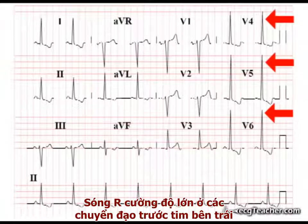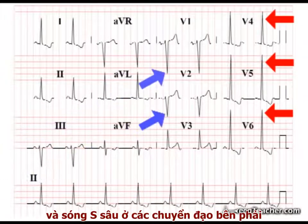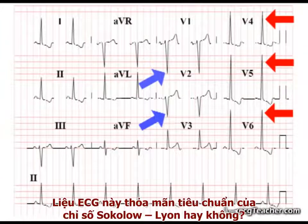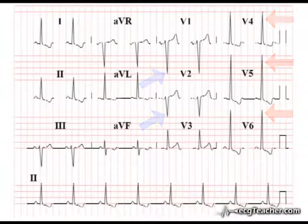The high amplitude R waves in the left-sided chest leads and deep S waves in those on the right are particularly striking and suggestive of LVH. But does the ECG satisfy the Sokolow-Lyon criterion?